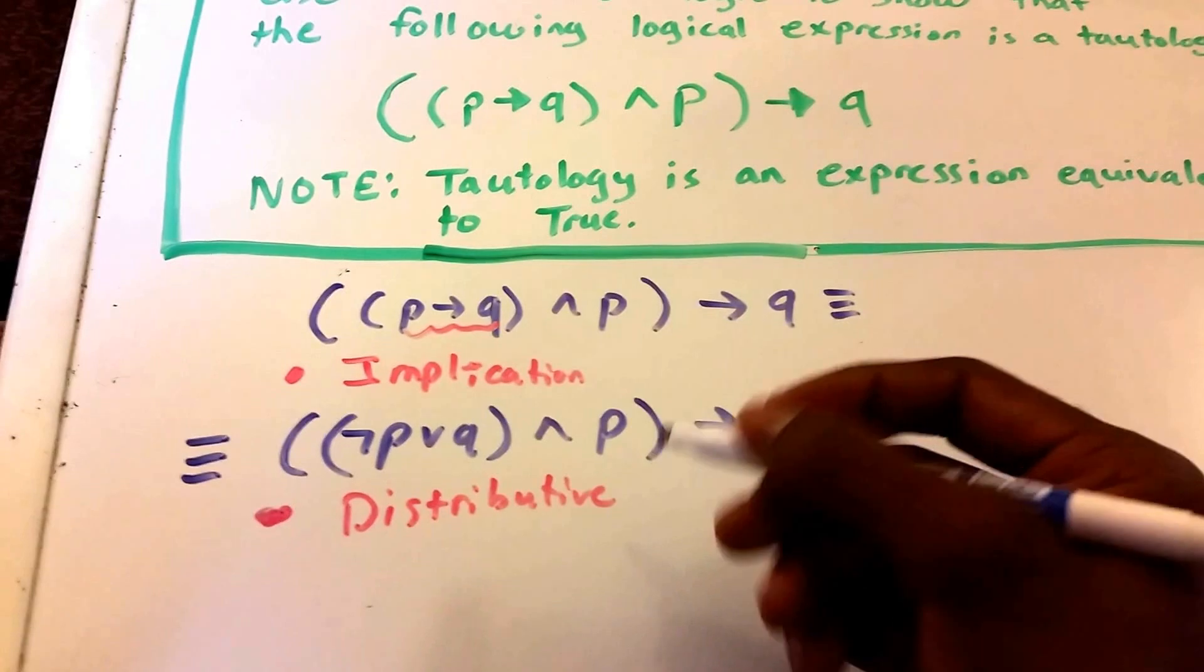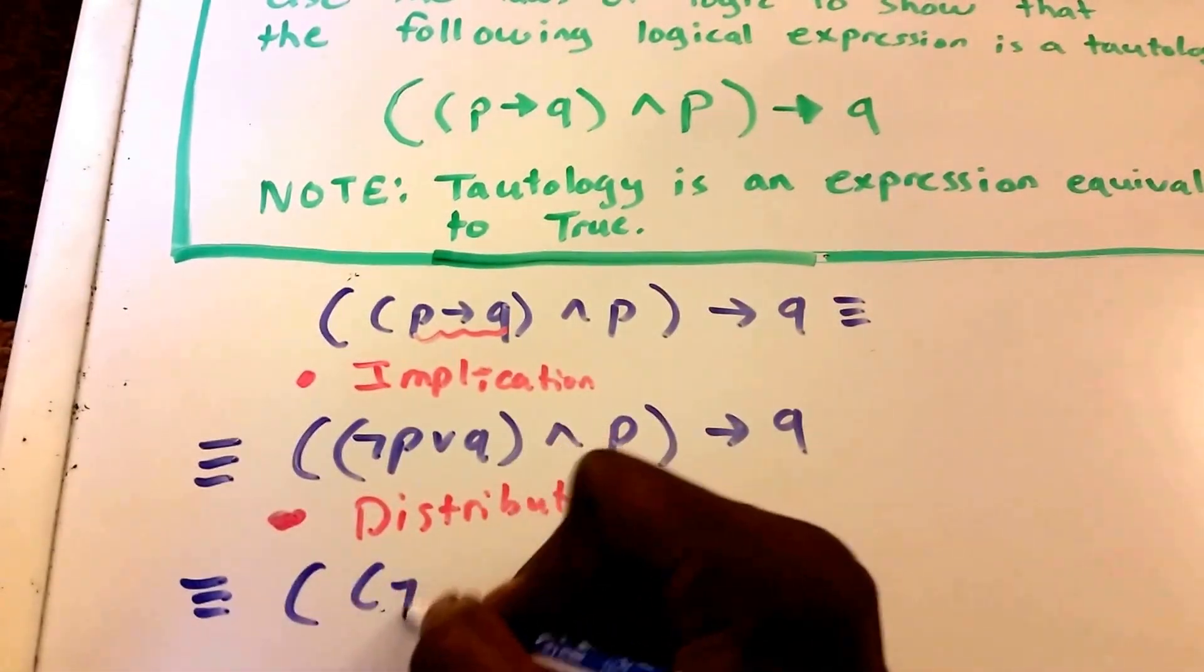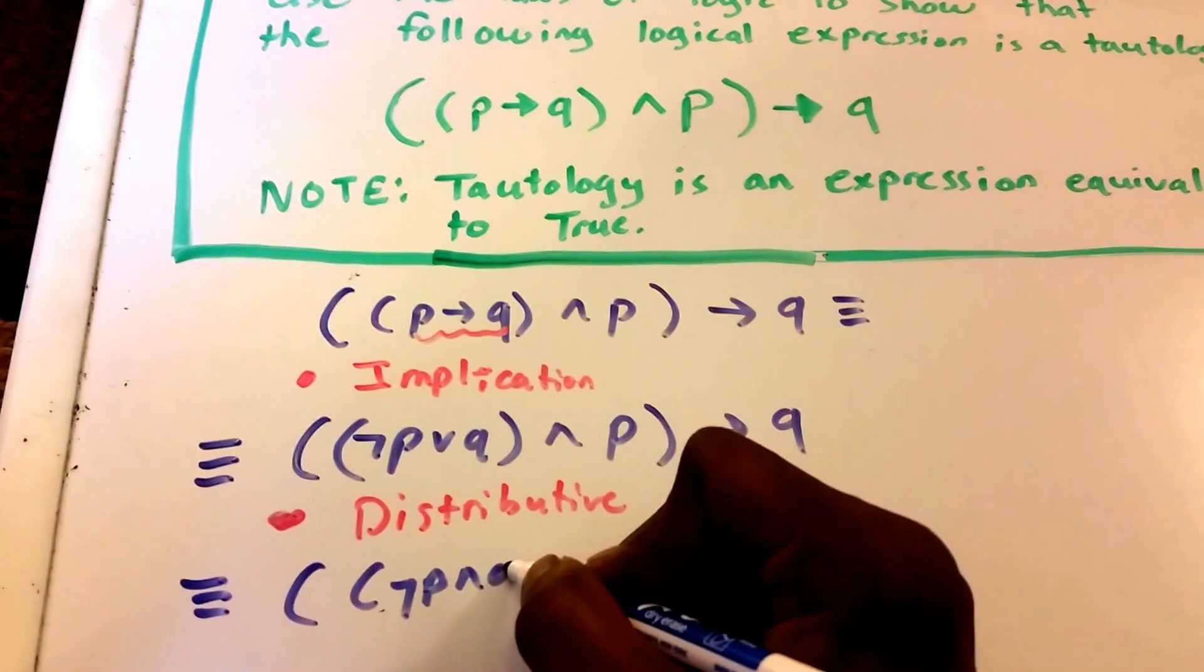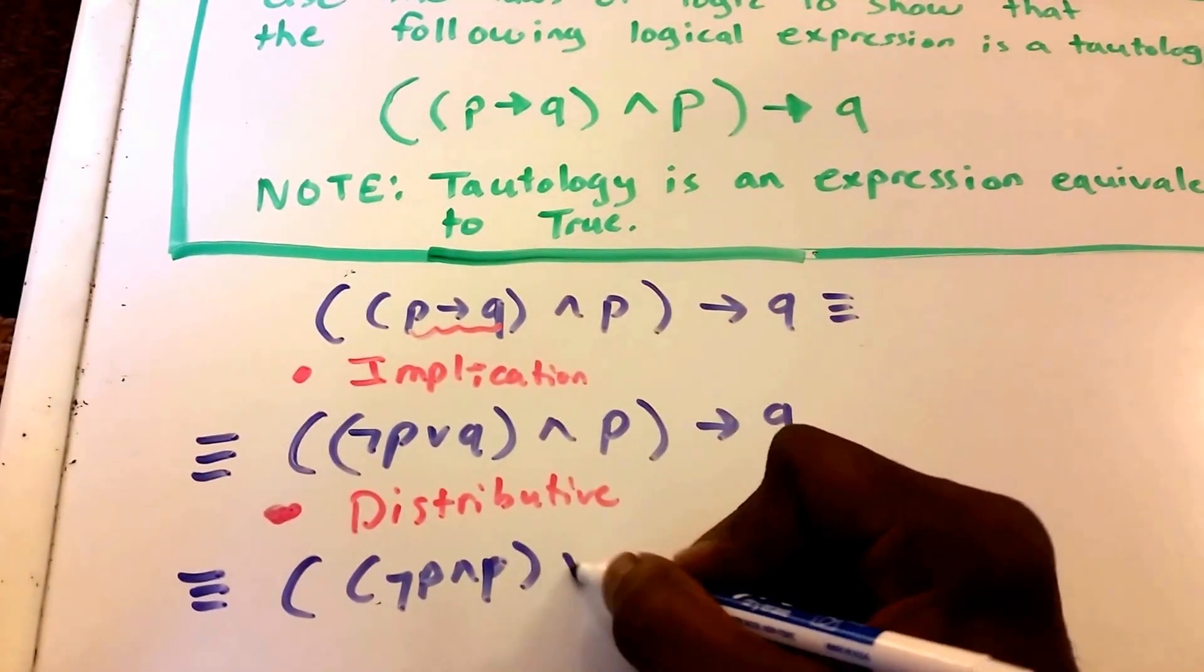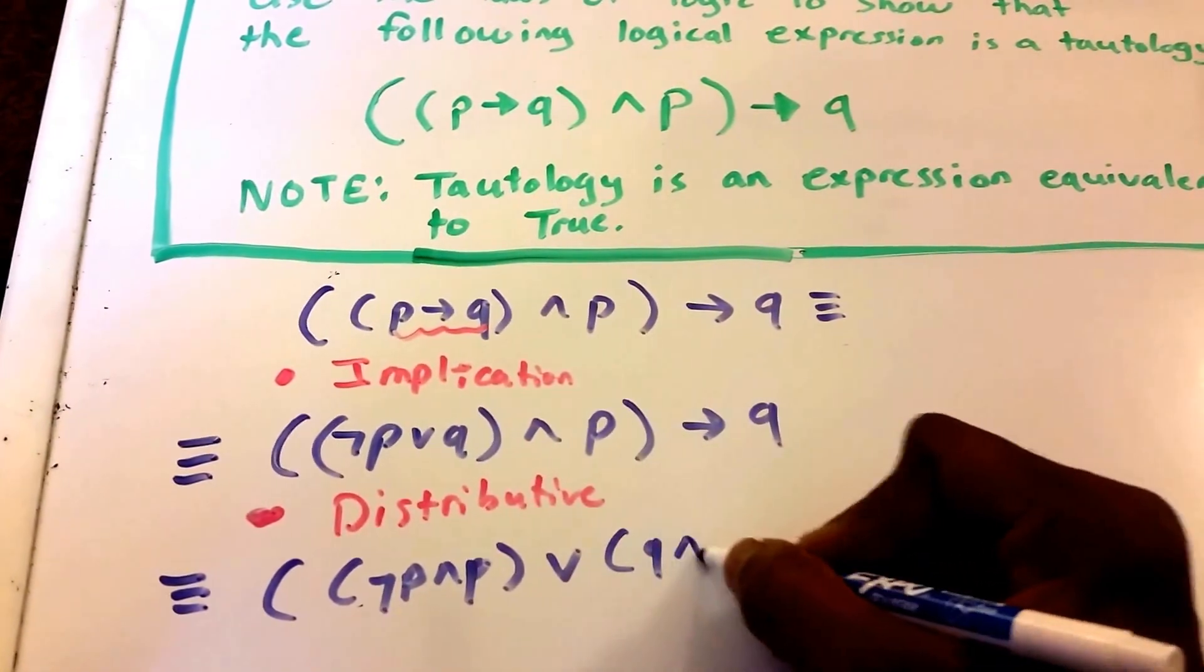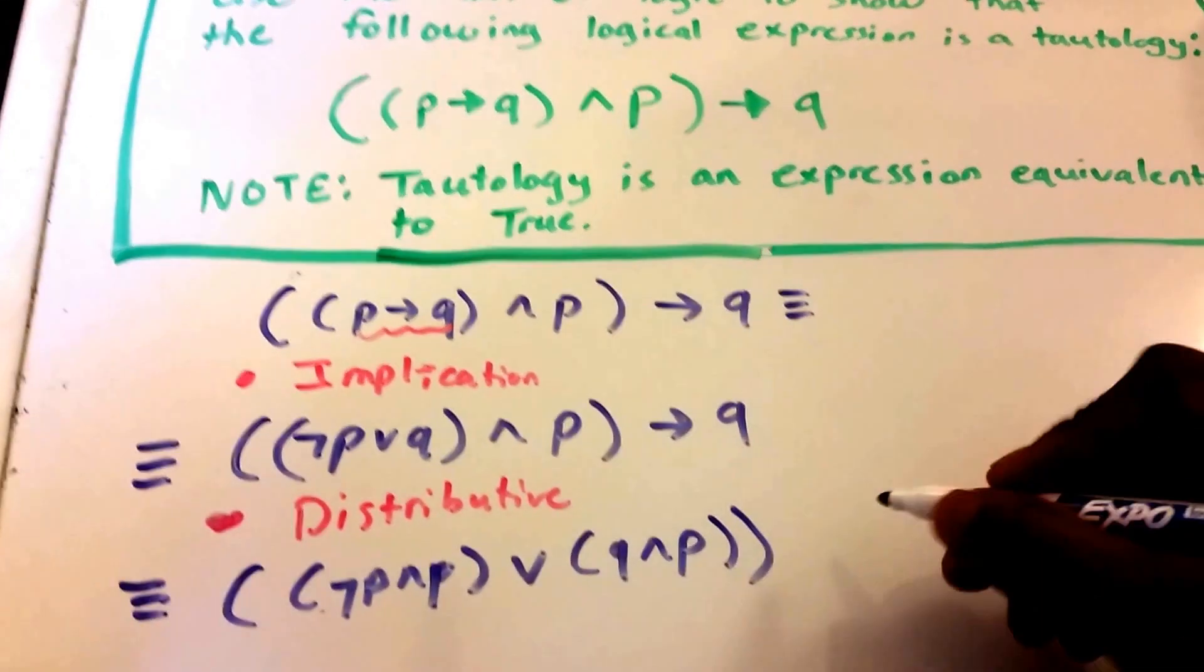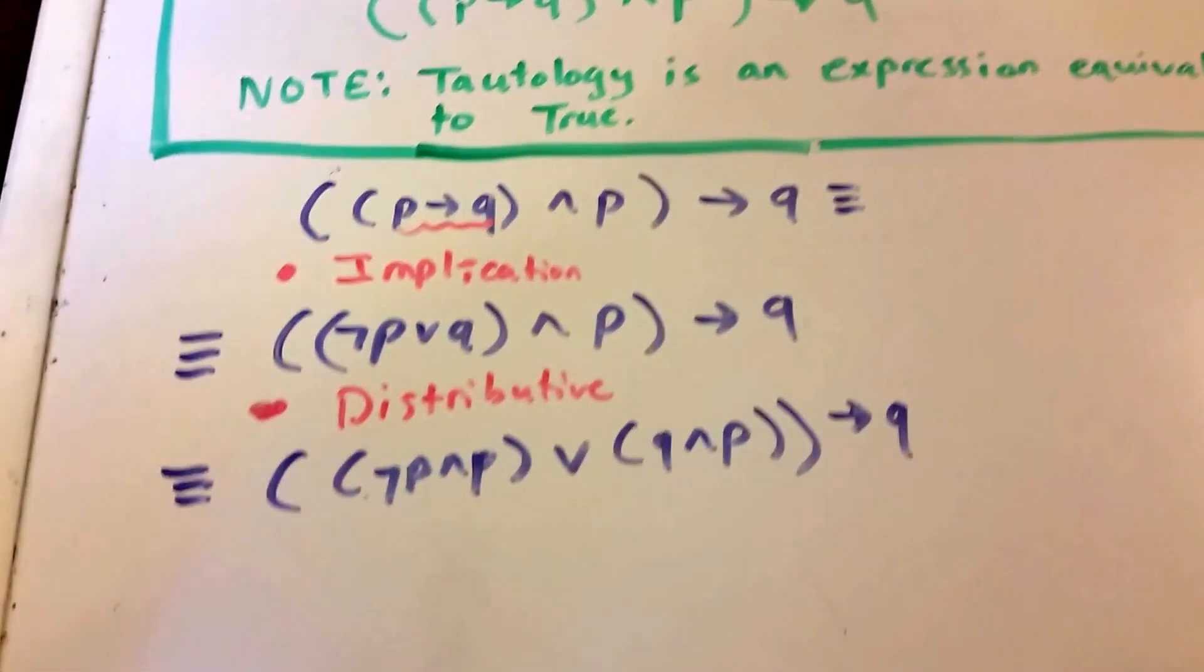So now we're doing distribution. So our expression is equivalent to not P and P or Q and P, and all of that implies Q.